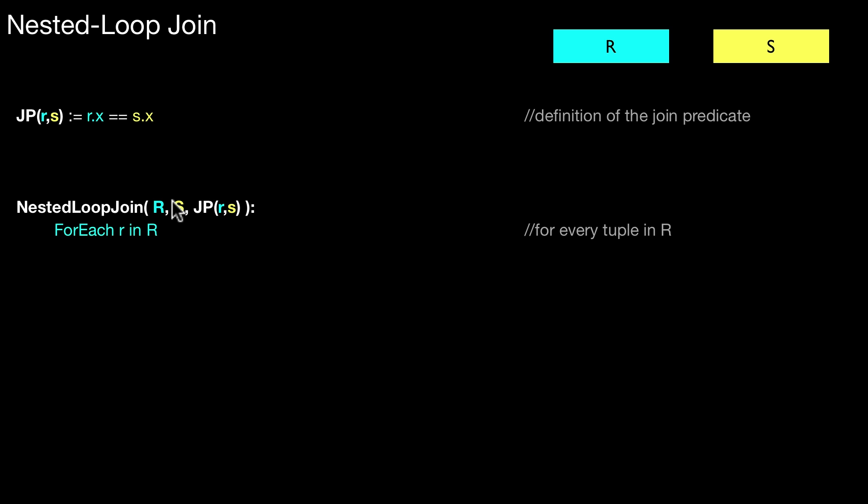The algorithm is really easy. It uses two loops. That is why it is called nested loop. So two loops, one is nested. One loops over all tuples from R, and one loops over all tuples from S.